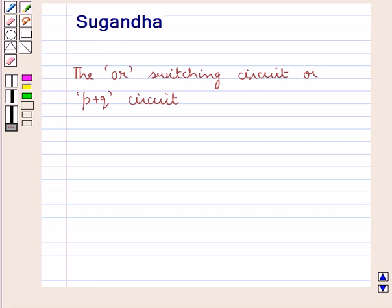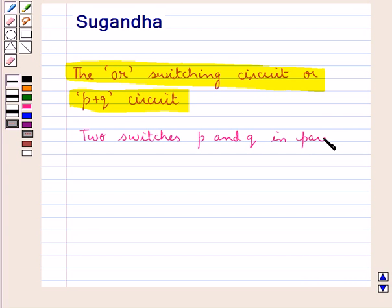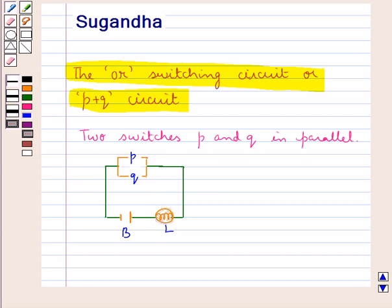Hello and welcome to the session. In this session, first we discuss the OR switching circuit or P plus Q circuit. We consider two switches P and Q in parallel. As you can see in this circuit, the switches P and Q are in parallel. B is the battery, L is the lamp. And this network is called a basic parallel network.